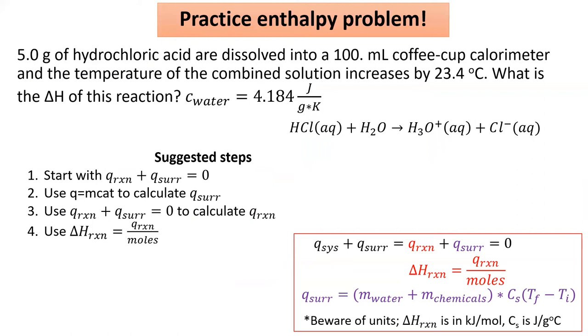Suppose a chemist drops five grams of hydrochloric acid into 100 milliliters of water and sees the temperature increase by 23.4 degrees Celsius. What is the delta H of this reaction? Pause the video and see how far you can get without my help.